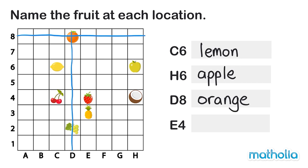And finally E4. The grid square at column E and row 4 is a strawberry. So a strawberry is at E4.